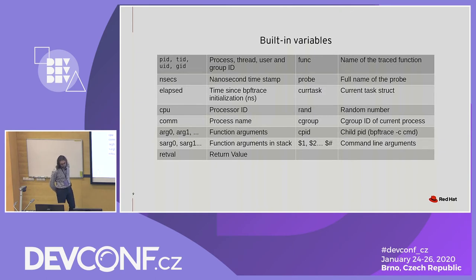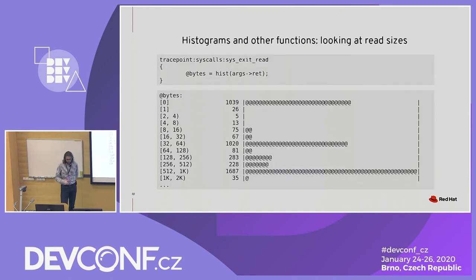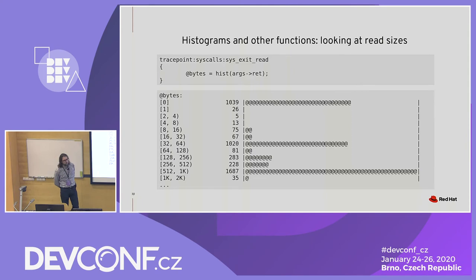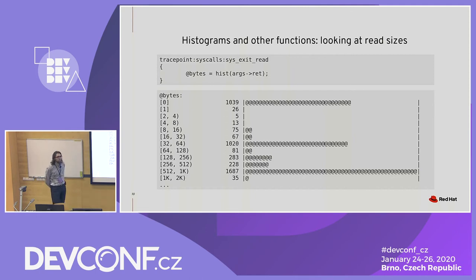Besides built-in variables, BPF trace also provides a few very useful functions. Here is an example of one of them: the hist() function, which returns a logarithmic histogram of all the values that have been passed to it — meaning all the values passed to it across all calls during the tracing session, since it only gets one argument at a time. So in this example, we get at the end a system-wide histogram of all the read sizes.